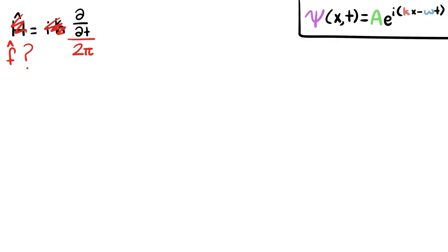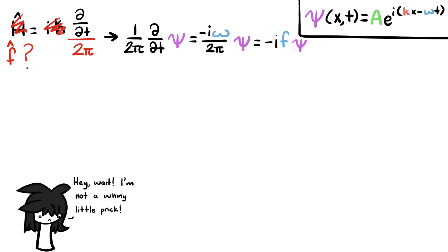First, we can start by modifying the energy operator to measure the frequency of the wave, or basically taking the time derivative and dividing by 2π. This lets us know if the question was asked by a whiny little prick like me or someone normal.